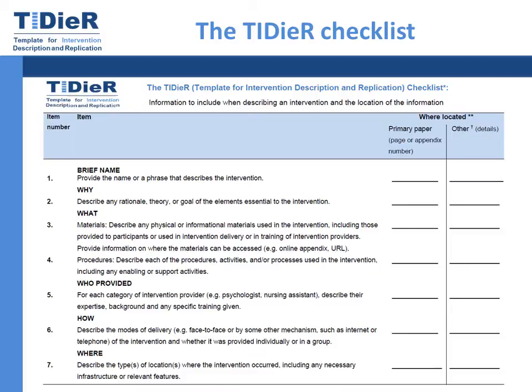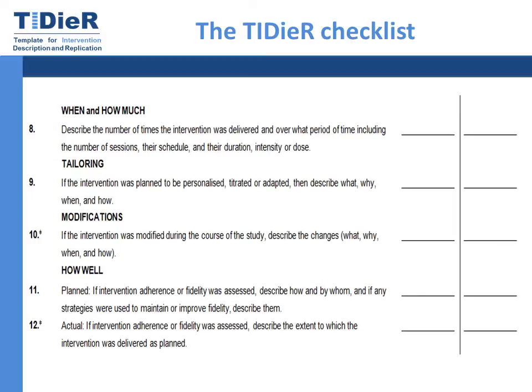The items on the TIDIA checklist include: the brief name of the intervention; any rationale, theory, or goal of the essential elements; details of what materials were used in the intervention and where they can be accessed; a description of each of the procedures, activities, or processes; information about who provided the intervention and how and where it was provided; when and how much of the intervention was provided; details about any planned tailoring; any unforeseen modifications; and the final two items are about fidelity, or how well the intervention was provided.